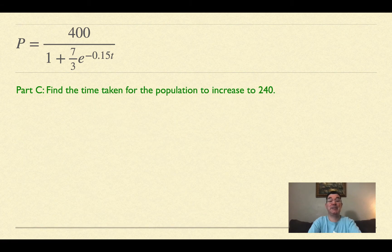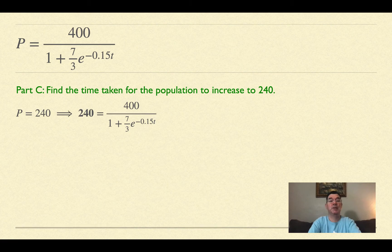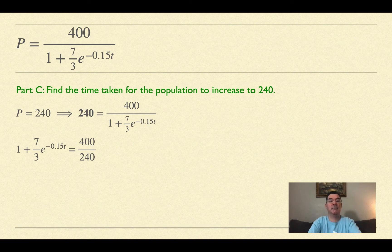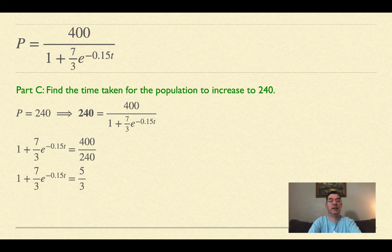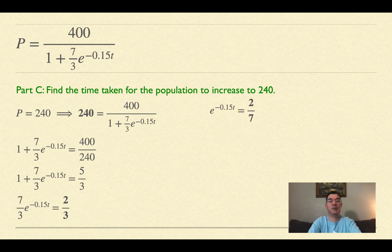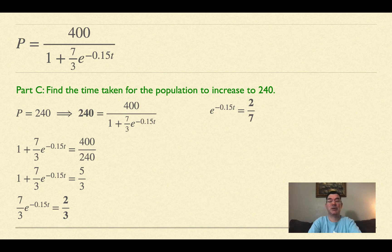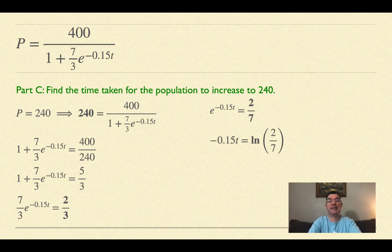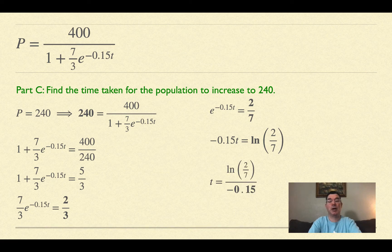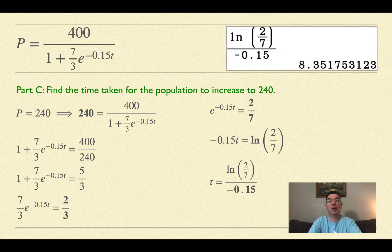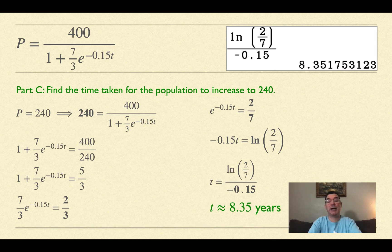Part C: find the time taken for the population to increase to 240. So P = 240 and I'm solving for t. I flip both fractions, multiply by 400, reduce to 5/3, subtract 1 to get 2/3, multiply by 3/7 so e^(-0.15t) = 2/7, take the natural log to get -0.15t = ln(2/7), and divide by -0.15. That's 8.35 years.